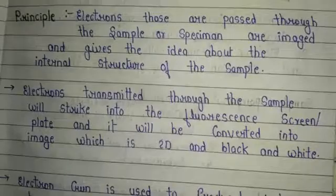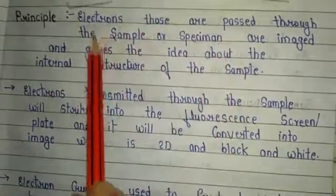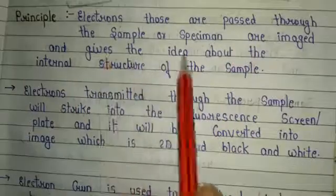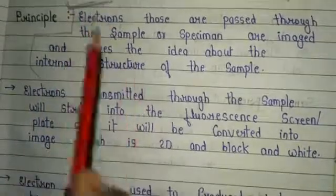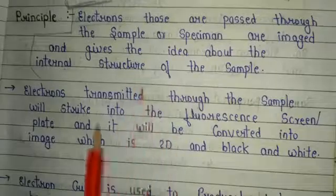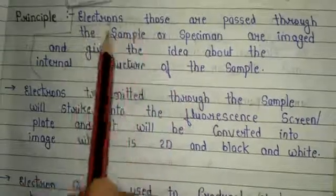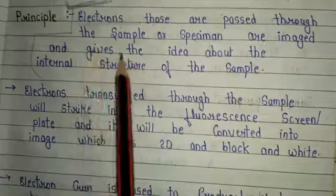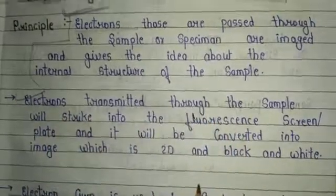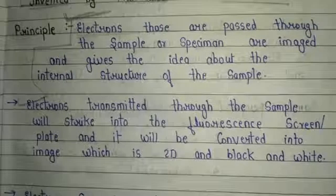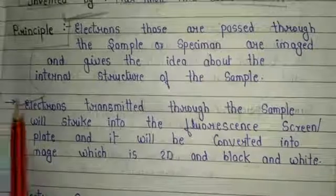When we go to the principle of transmission electron microscopy, the theory portion states that electrons which are passed through the sample or specimen are imaged and give an idea about the internal structure of the sample. A second important point is that electrons transmitted through the sample will strike a fluorescence screen and be converted into an image, which is 2D or black and white.